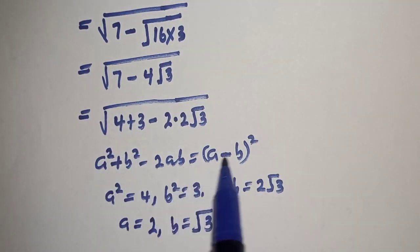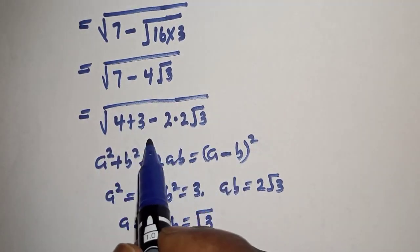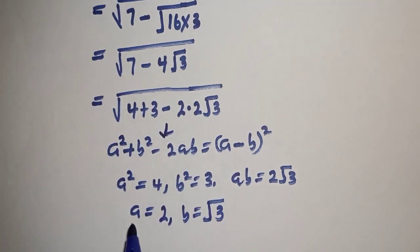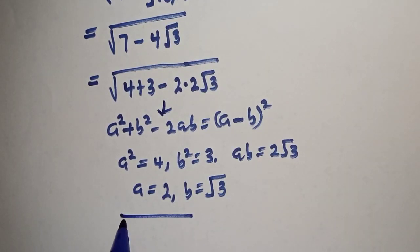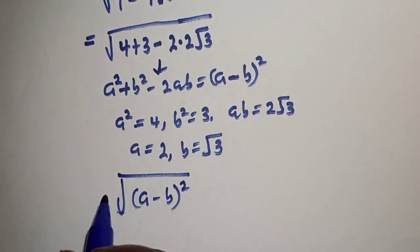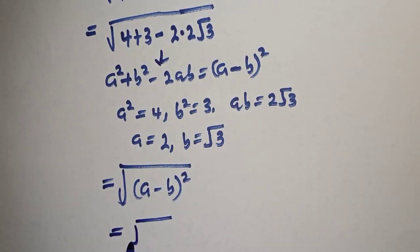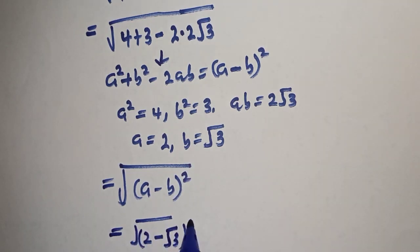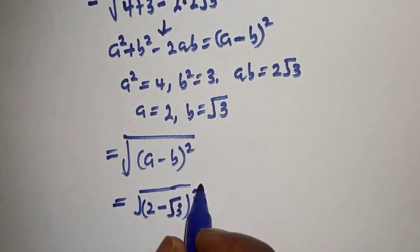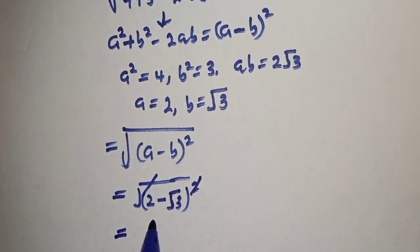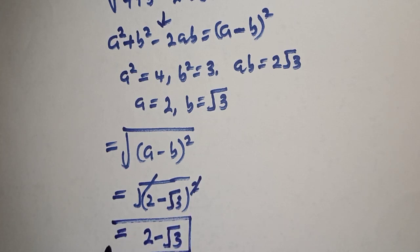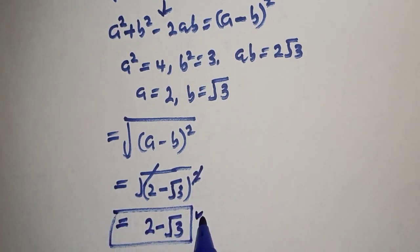Since all of this is equal to this, and this is equivalent to this, therefore we have square root of a minus b squared. We already know that a is 2 and b is root 3. This is equal to 2 minus root 3, and this is the final answer. Before you leave, like, share, comment and subscribe.